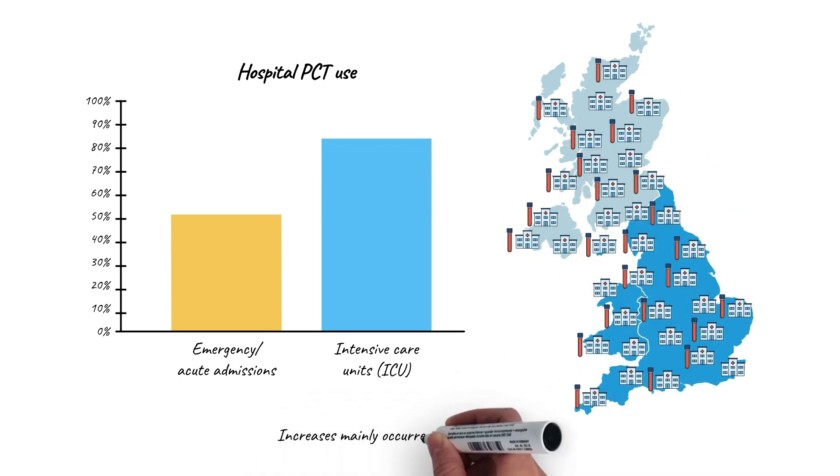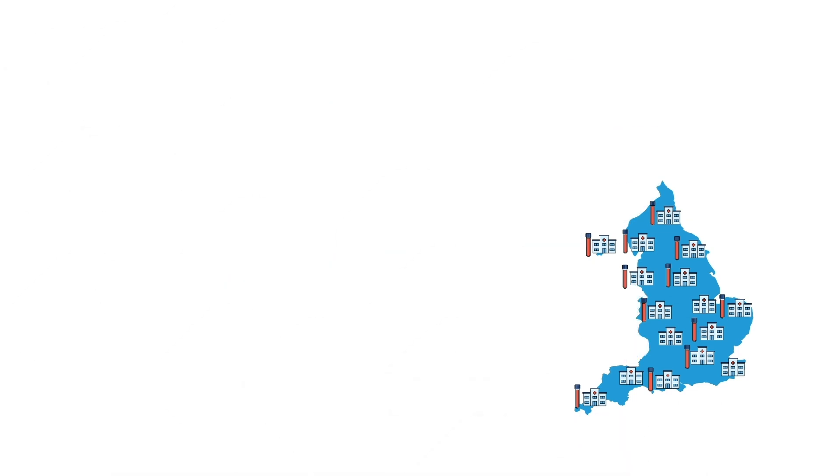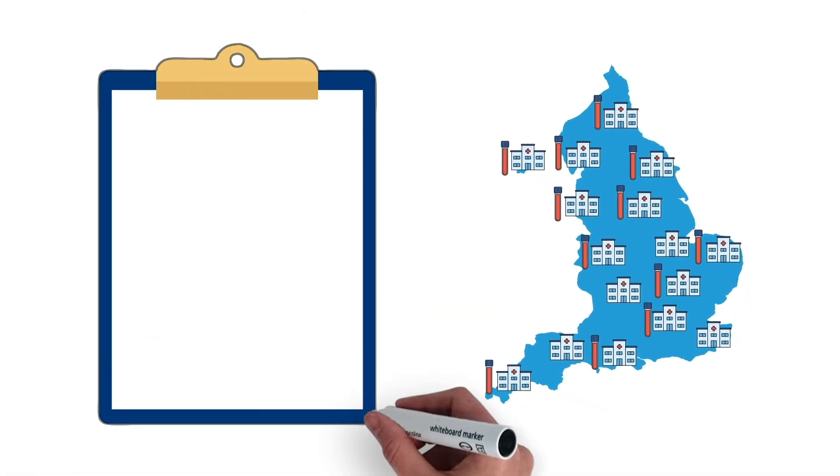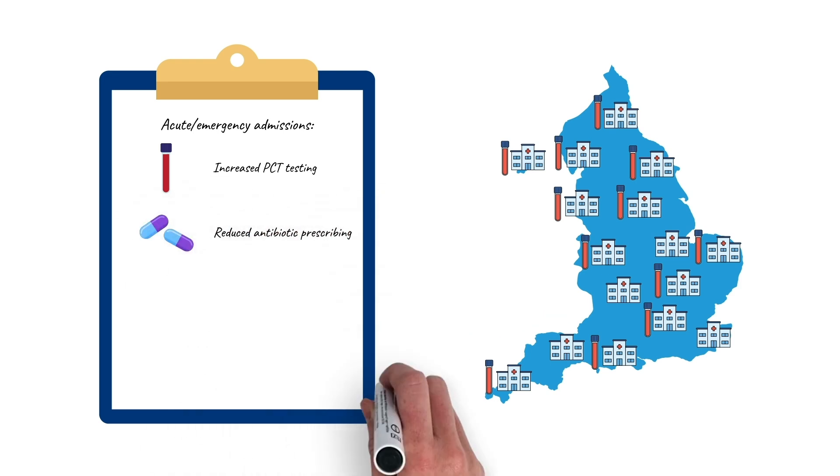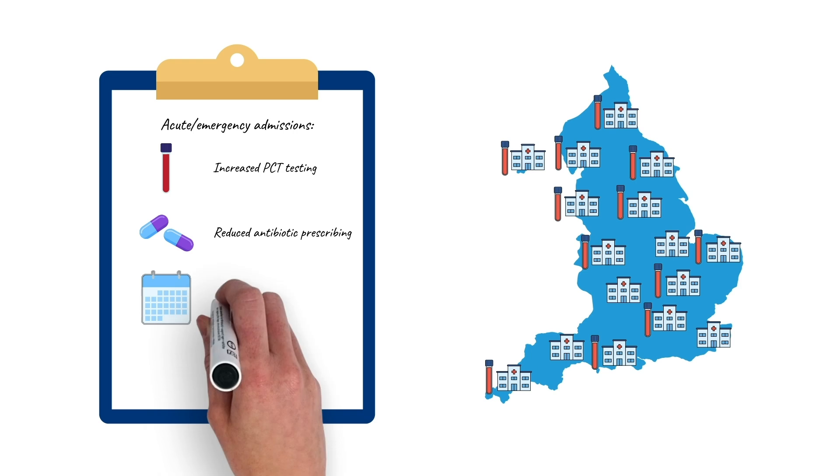And from 48% to 84% in intensive care units. Analyzing hospital data, introducing PCT testing in emergency departments and acute medical admission units was linked to reduced antibiotic prescribing. This effect lessened over time.